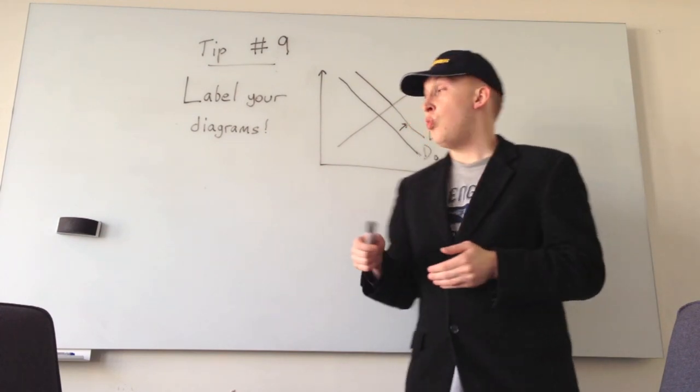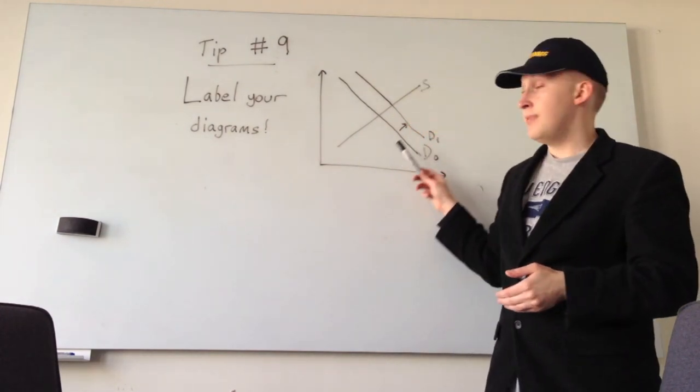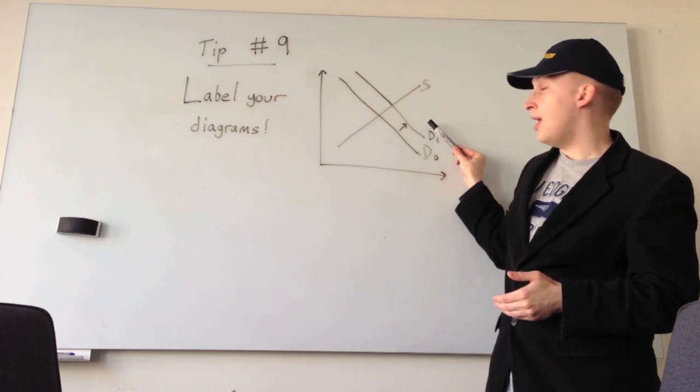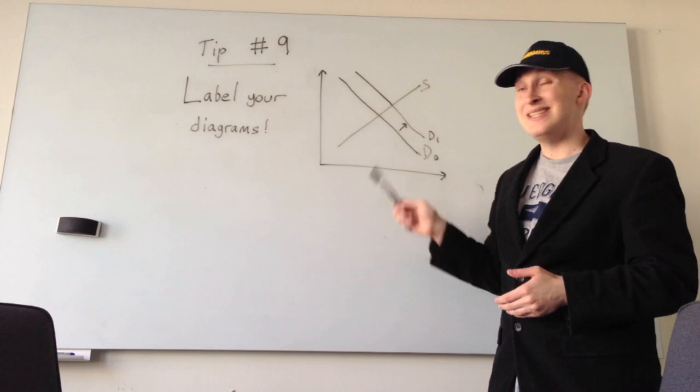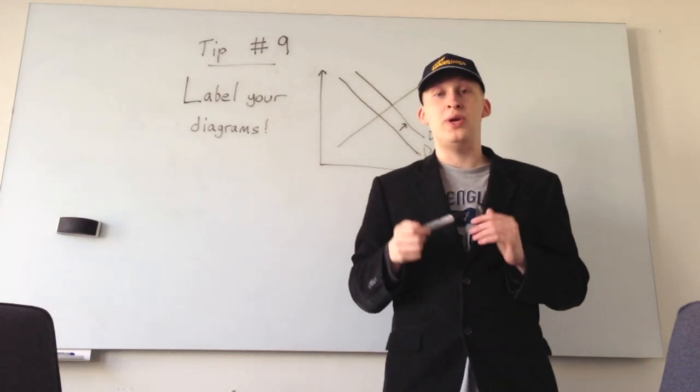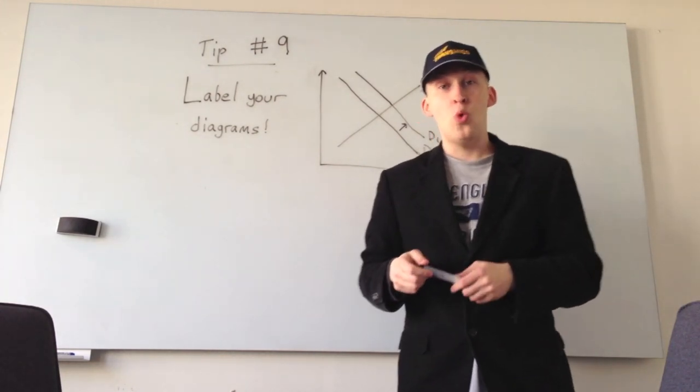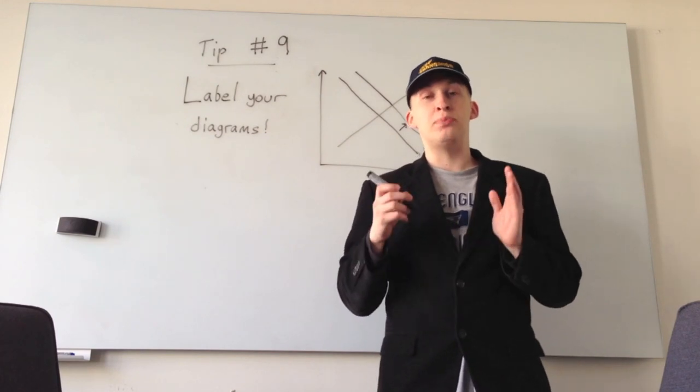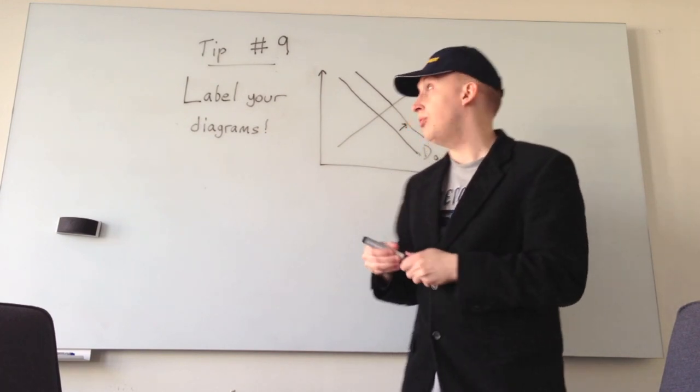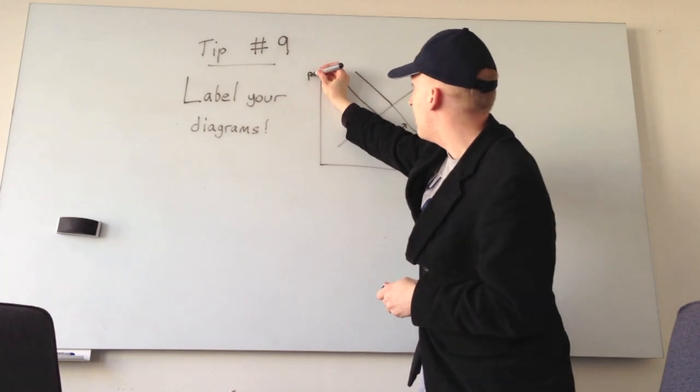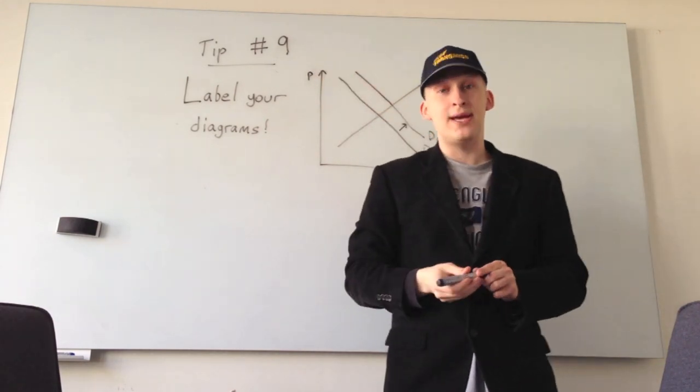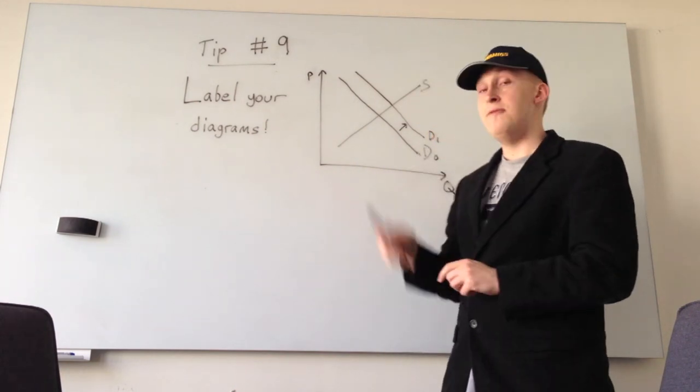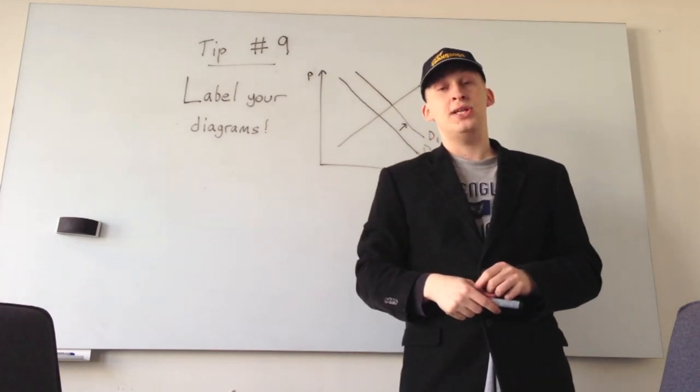So for example, say we want to know which way demand would shift. Say we have demand shifting upwards from D0 to D1. This is not enough to achieve full marks if you're asked to illustrate your example. What you must do for a traditional supply and demand diagram is to label price and then label quantity demanded. This will give you full marks in the exam.